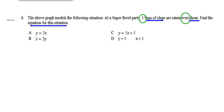Question 6. The above graph models the following situation: at a Super Bowl party, five bags of chips are eaten every hour. Remember, 'every' means one — so five bags of chips per one hour. Find the equation for this situation.